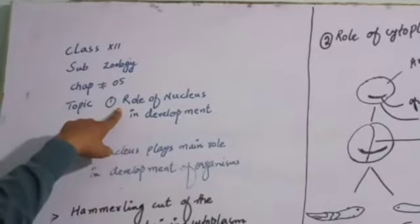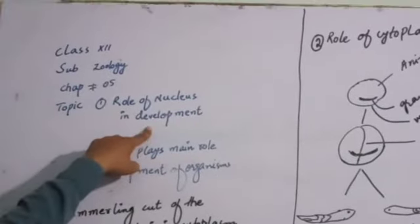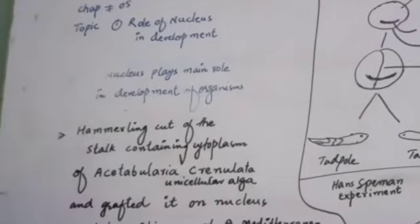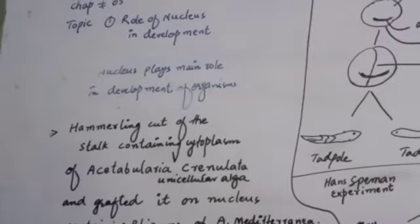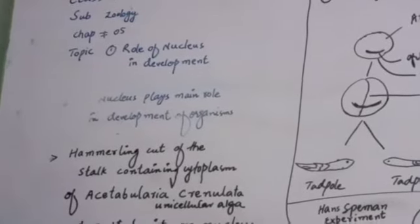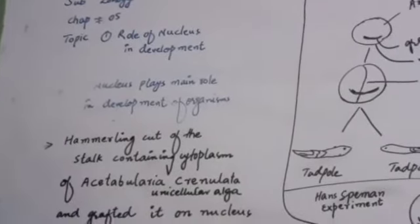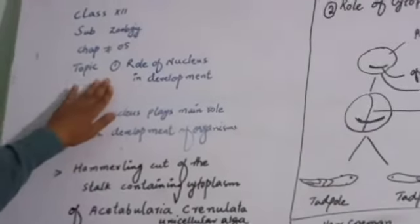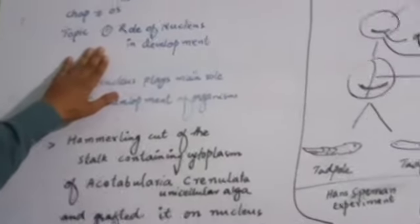I have selected two topics: one is Role of Nucleus in Development and the second topic is Role of Cytoplasm in Development. Development means changes during embryonic condition. When these changes occur up to formation of embryo, they are called Development. The study of development is called Developmental Biology or Embryology. Today we will discuss the role of Nucleus in Development.